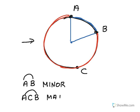We name minor arcs with two letters that are the endpoints of the arc, and we name major arcs with three letters. Of course, if a circle is divided into a minor arc and a major arc, the sum of their measures is 360 degrees.